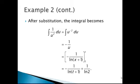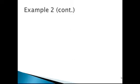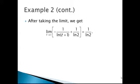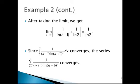Replacing u with x again — recall u was defined as the natural log of x plus 1 — we have negative 1 over the natural log of x plus 1, evaluated from 1 to t. This gives us negative 1 over the natural log of t plus 1, plus 1 over the natural log of 2. Taking the limit as t approaches infinity, the first term goes to 0, leaving us with 1 over the natural log of 2. Since the integral converges, the series also converges.